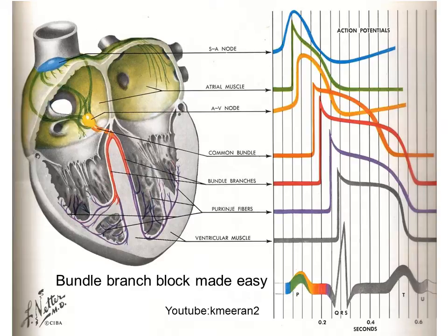Heart block — 1st degree, 2nd degree, and 3rd degree — are all caused by ischemia at the AV node. But what happens if you get ischemia a bit lower down in either the right bundle or the left bundle? Well, that's when you get right or left bundle branch block.